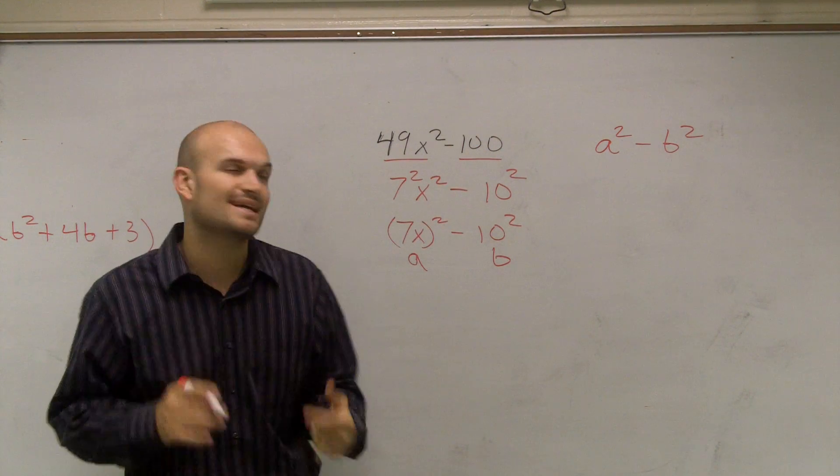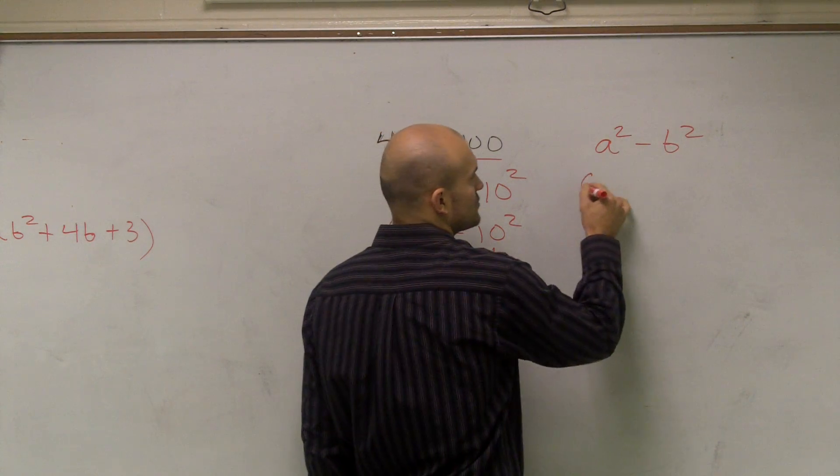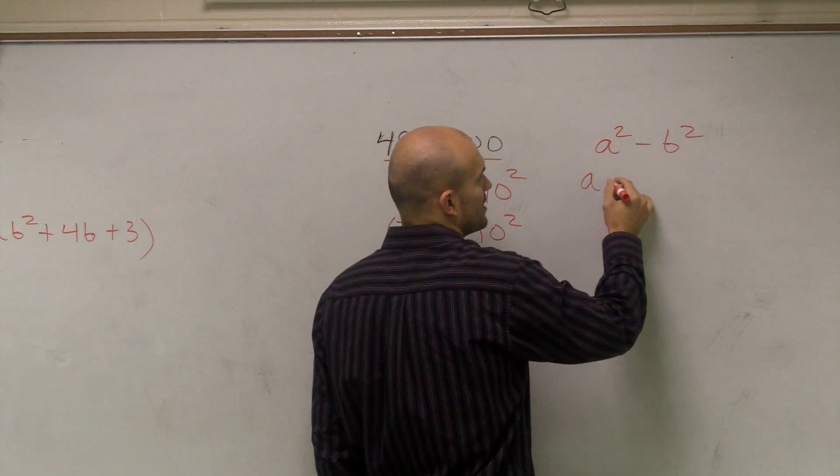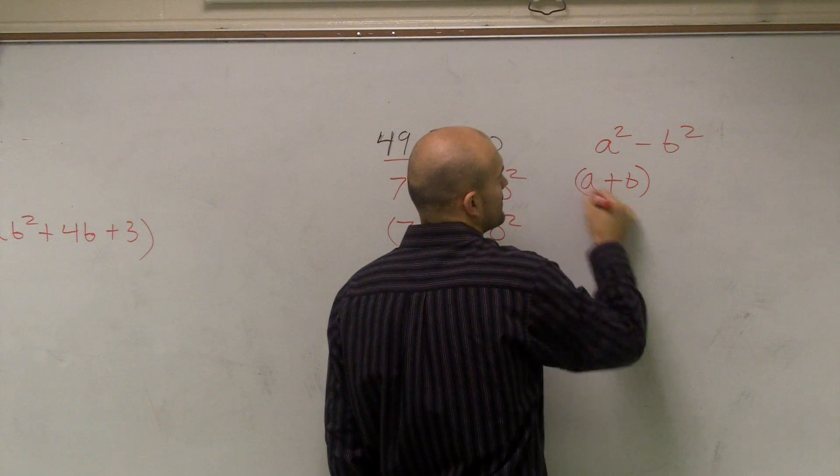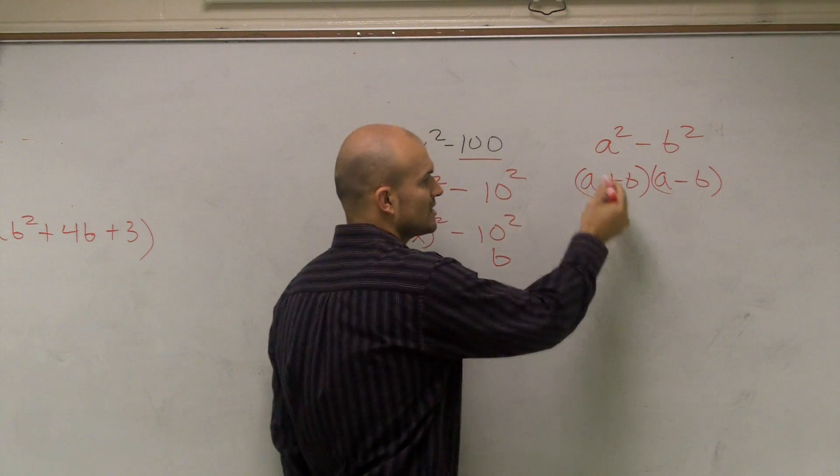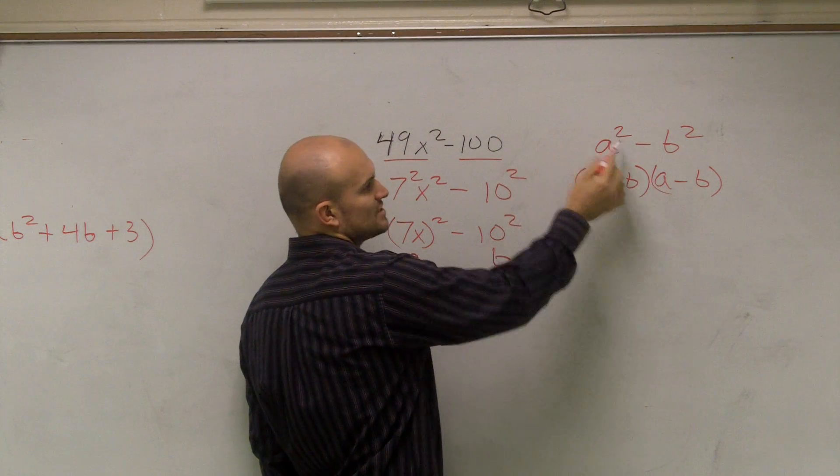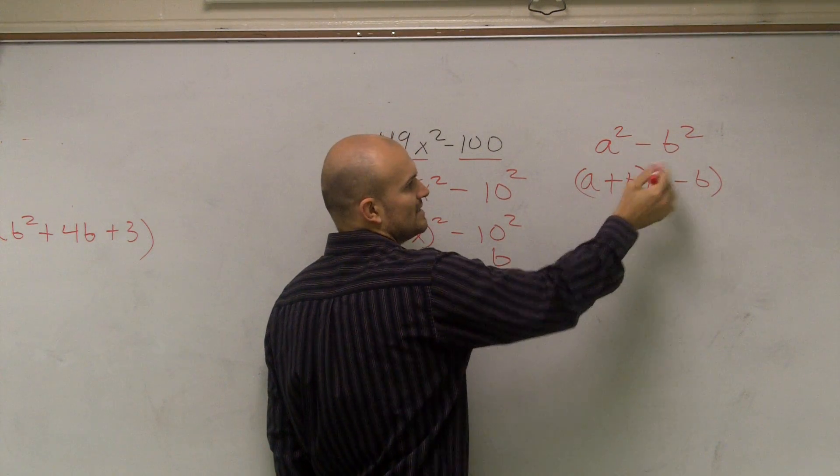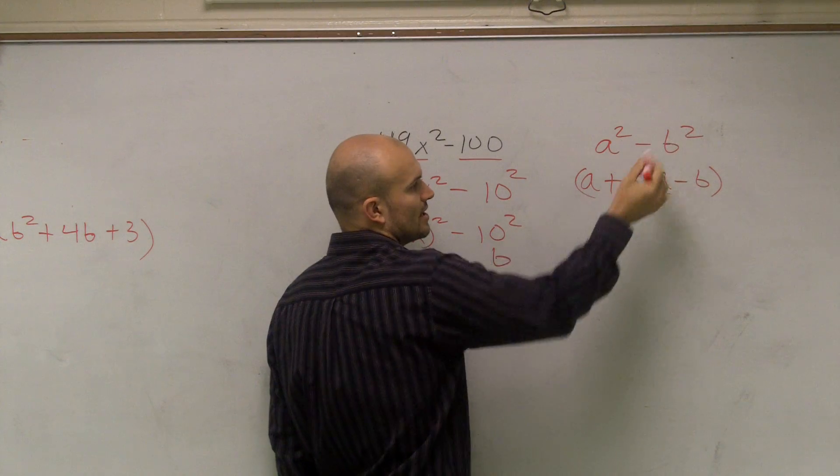So what that means is our middle terms cancel out. The difference of two squares tells us A squared minus B squared is equal to A plus B times A minus B. Because A times A will give you A squared. B times B will give you negative B squared.